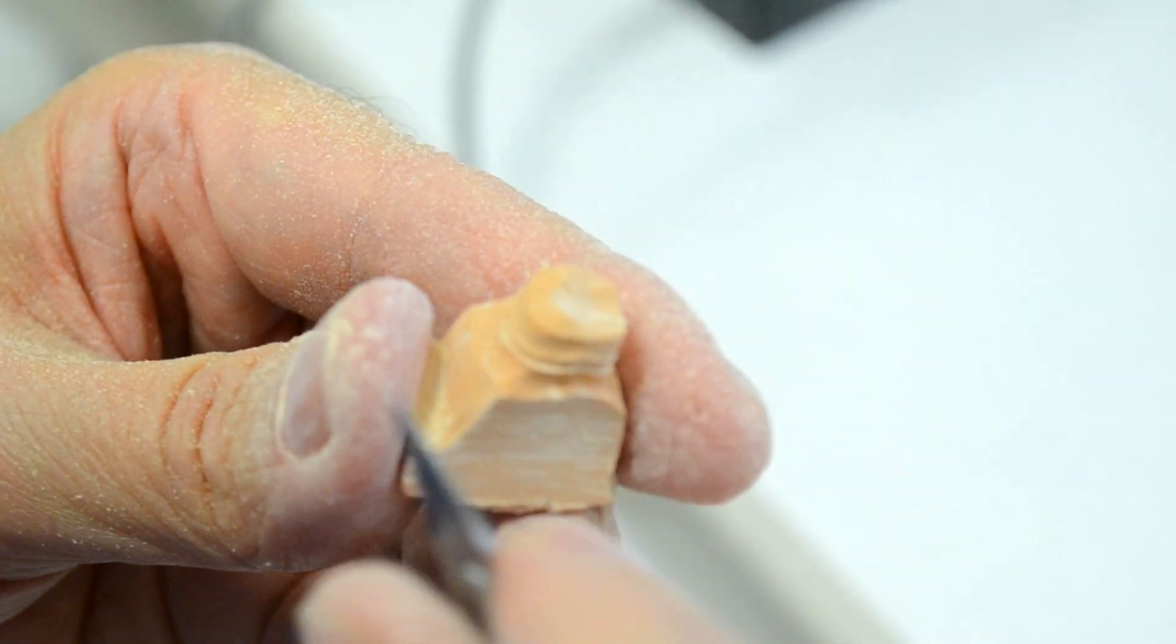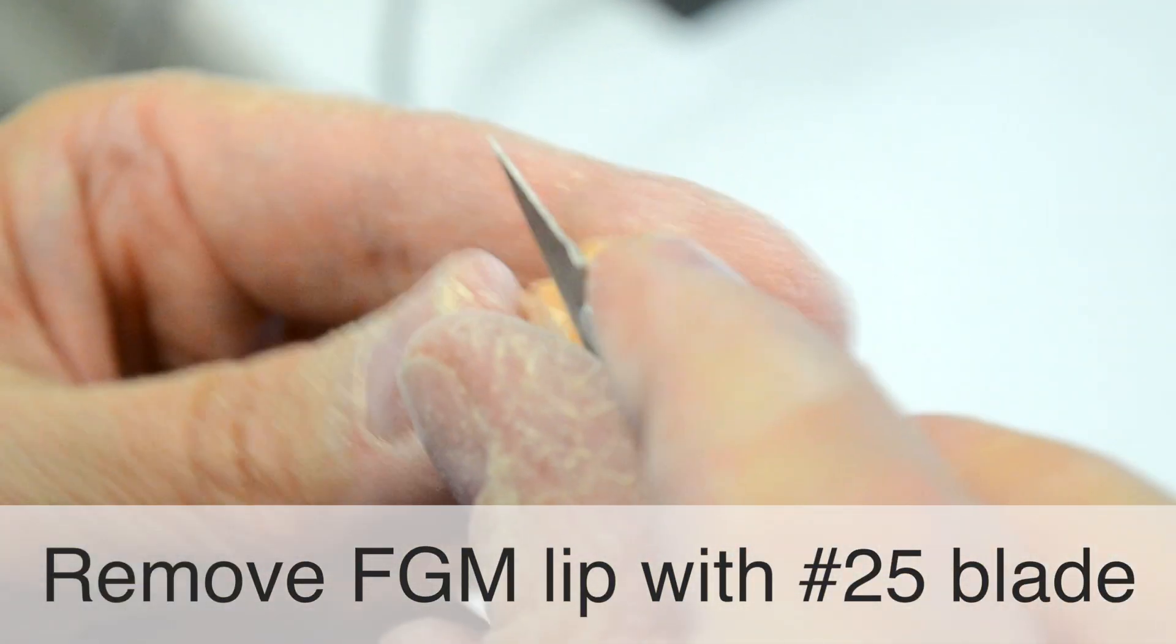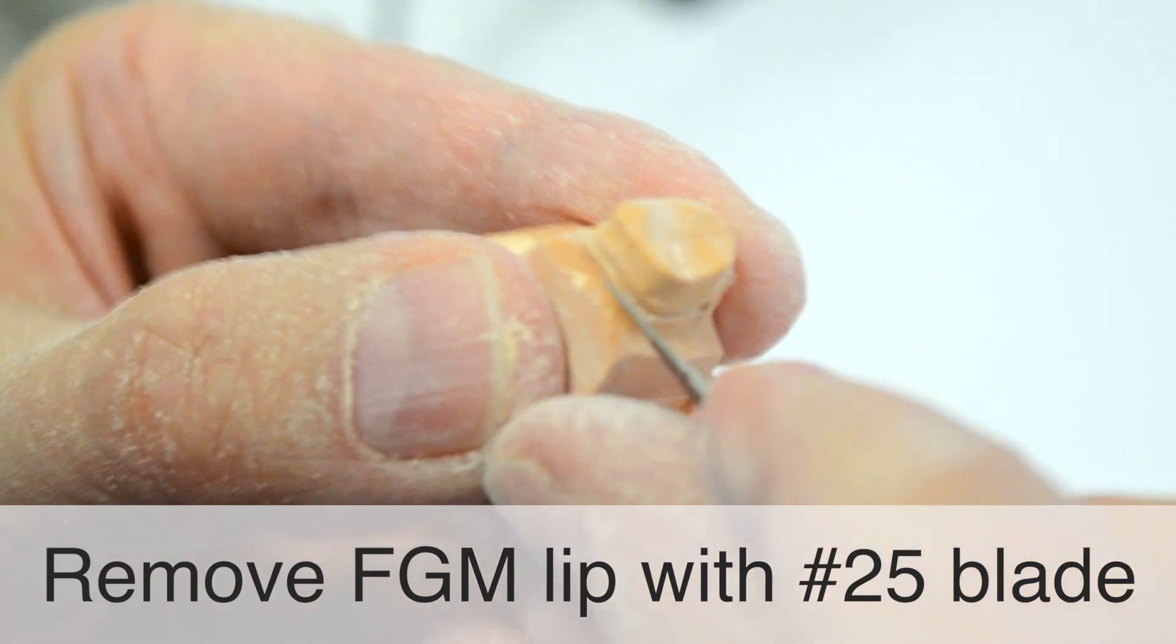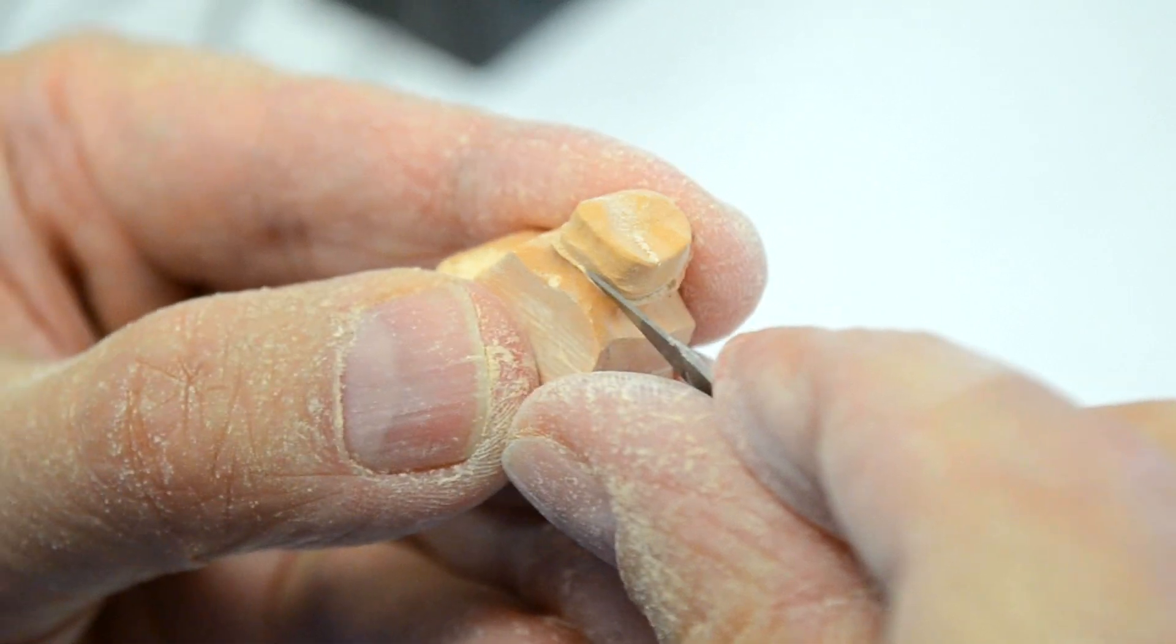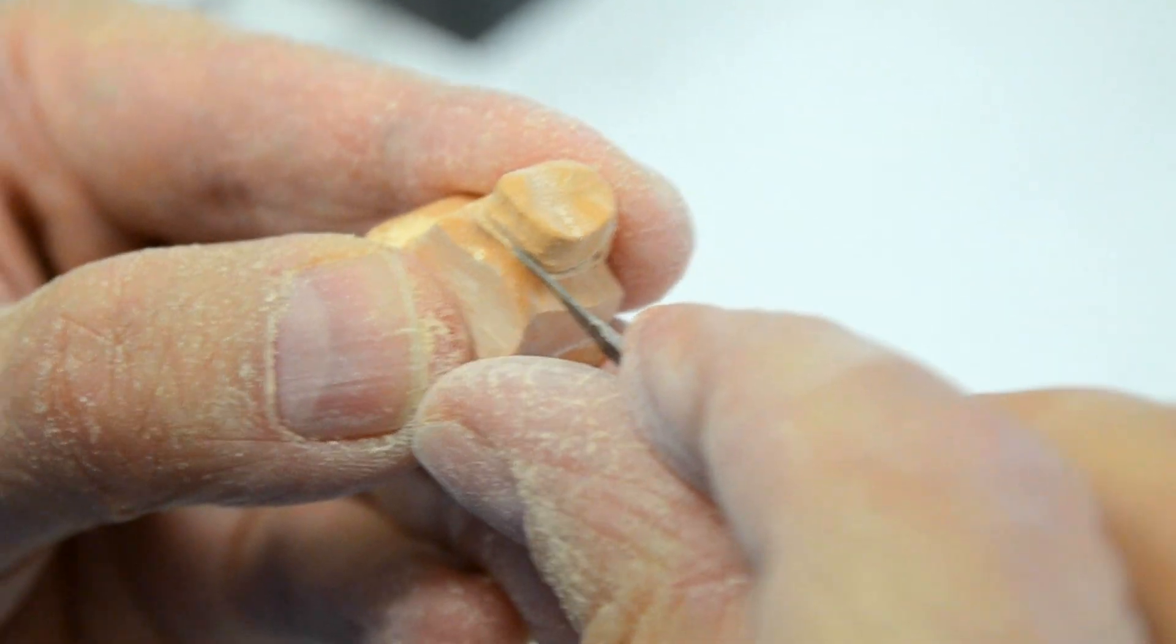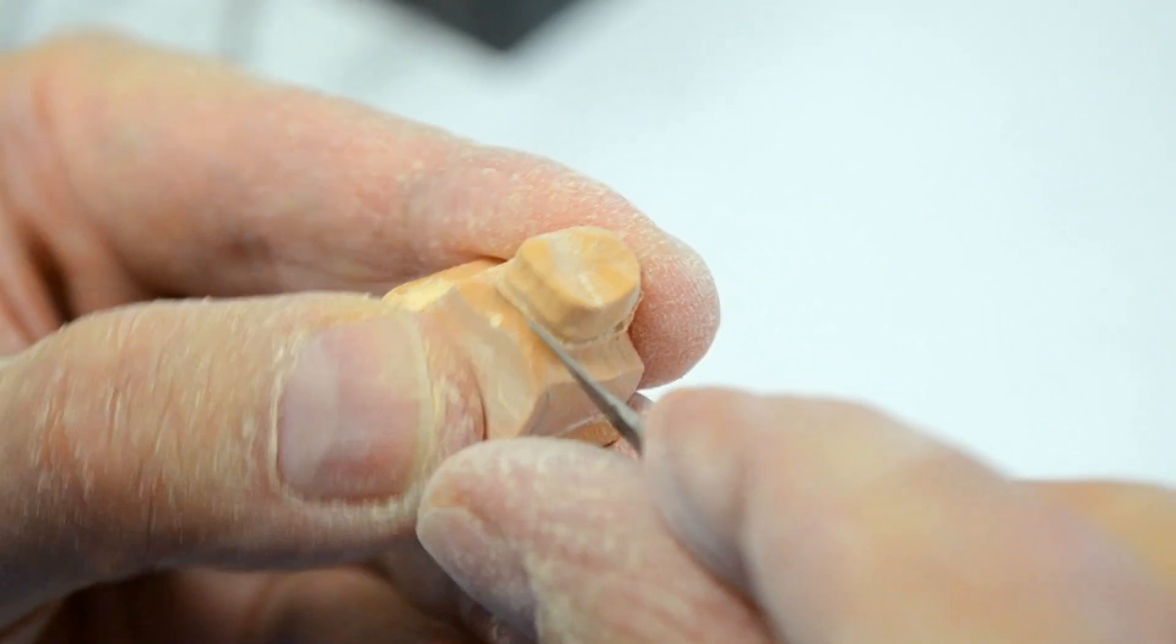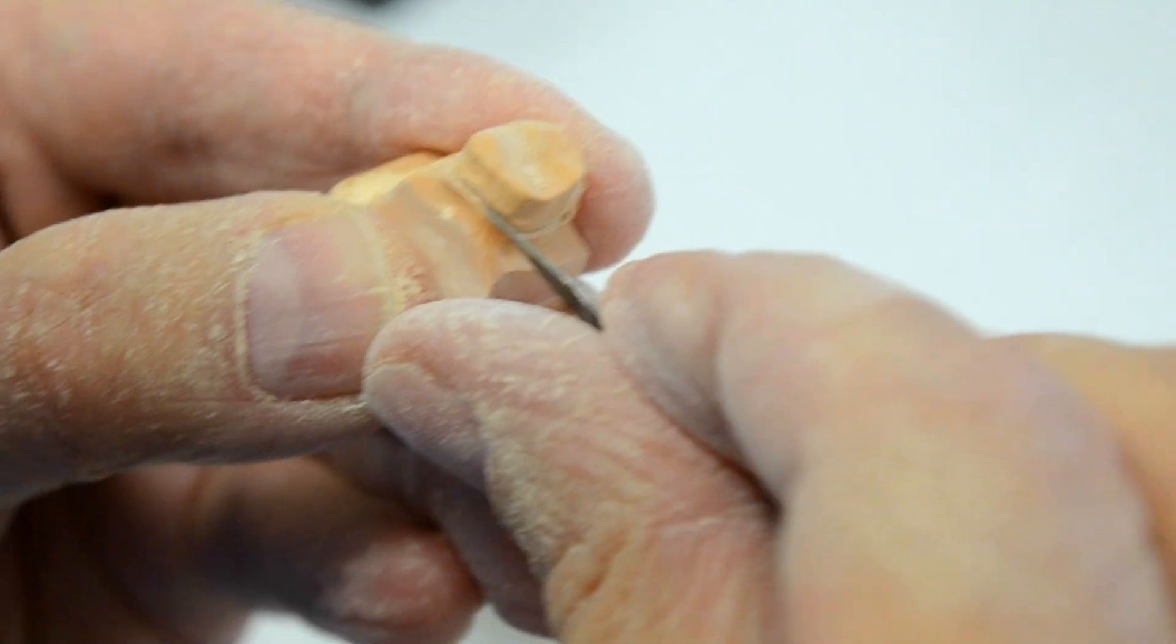The very next step involves removing that portion of stone using a number 25, very sharp blade, preferably a new blade that is less apt to slip and cause you to cut your finger. The other advantage of a very sharp blade is the fact that you will not have to exert nearly as much pressure when removing the stone.